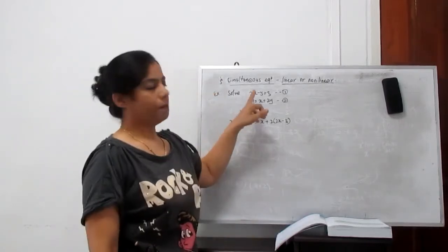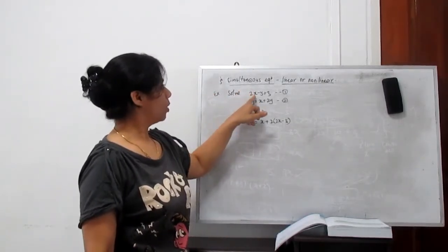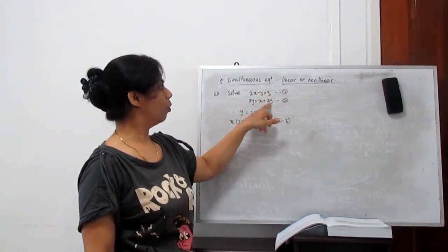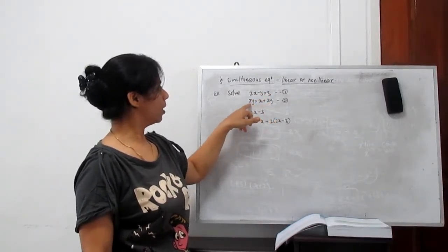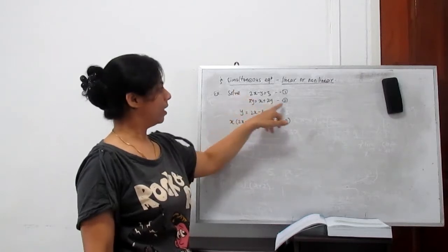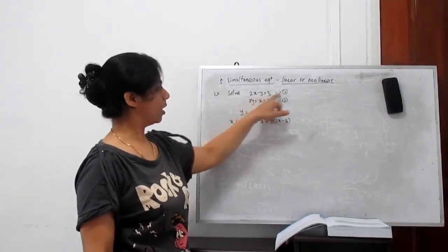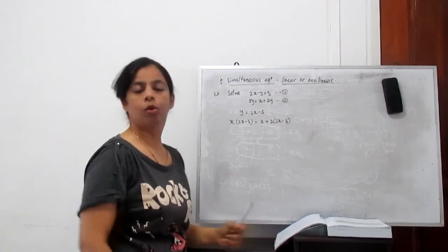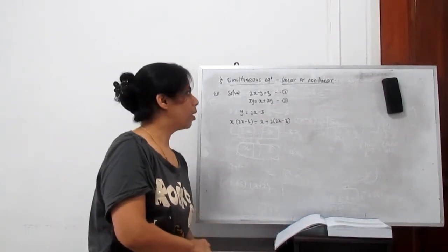With this example, we have 2x minus y equals 3, and another is xy equals x plus 2y. Here x times y makes the degree 2, so this equation is not linear. This is a quadratic equation. The degree of this equation is 2. So how to solve? Same process.